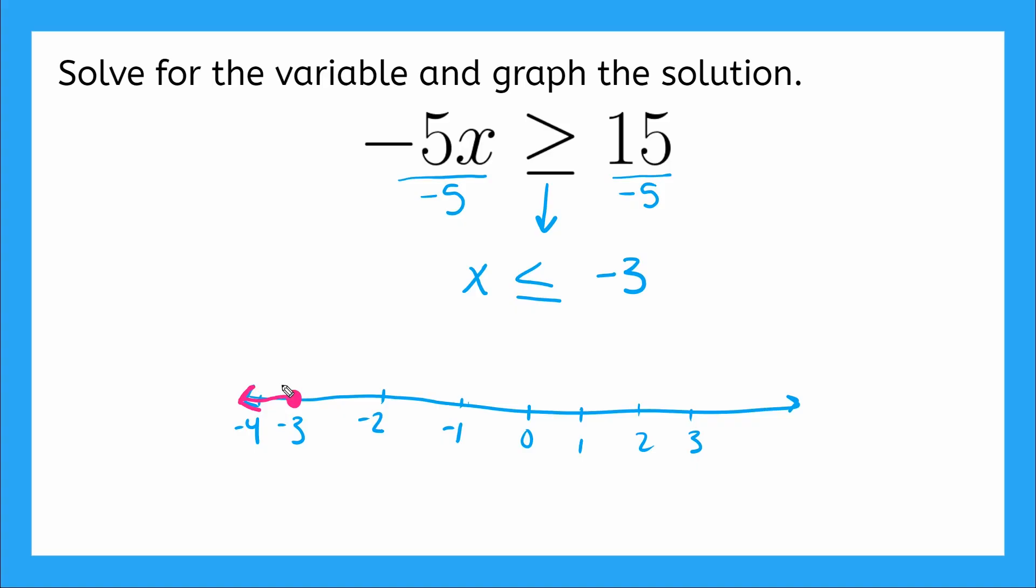So let's just double check. Since this is kind of funky and our first time doing it, let's double check and plug in a solution. So let's say we plug in when x is equal to negative 4. So we plug it in here. We'll have negative 5 times negative 4 is greater than or equal to 15.